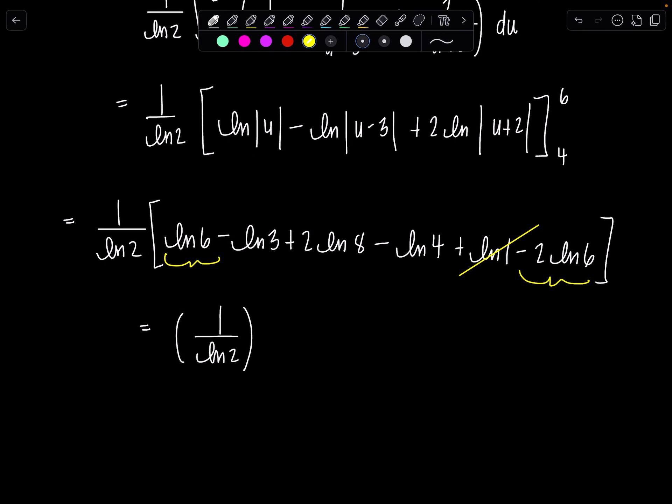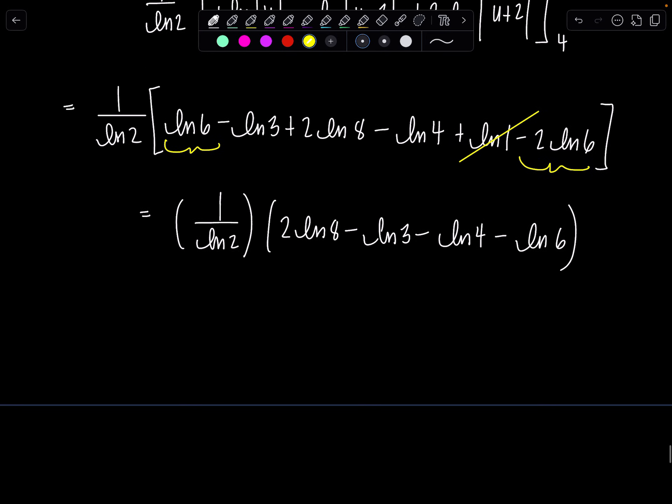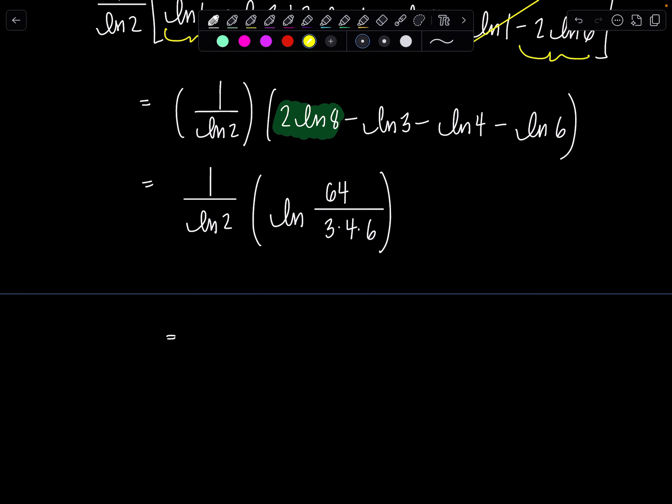So 1/ln(2) times we have 2ln(8). That's the only one that's positive. And then -ln(3) - ln(4) - ln(6). Let's combine those into a single logarithm. So 1/ln(2). So this is ln(64). And then I'm going to combine all the rest of them into the denominator. 64 over 3 times 4 times 6, which is 72. So this can simplify to ln(8/9). And then I have over ln(2).